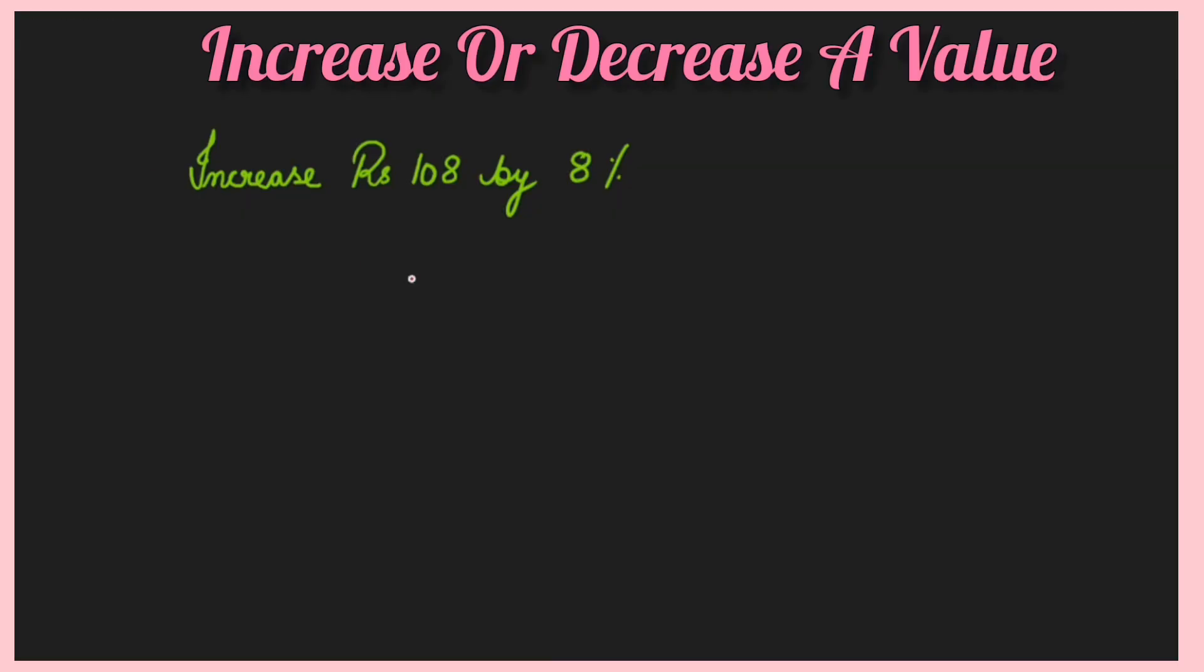Check out the first sum. The first sum says increase rupees 108 by 8 percent. That means you write down 108 rupees plus 8 percent of 108. That means you need to increase by 8 percent. So you can write down 8 by 100 into 108. Once you write that down, can you take 108 common? See, plus is there in between. This is two terms, right? So you can take 108 common.